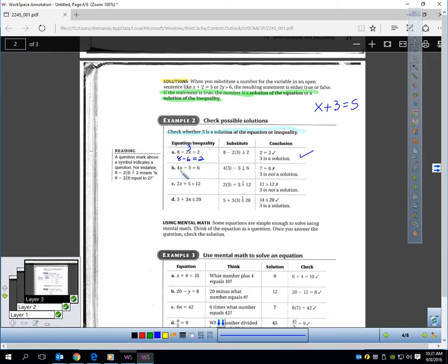Let's check here. If I plug in 3, do I get, can you see here, do I get it equal to 6? Let's try. Let's plug in a 3. 4 times 3 is 12. Is 12 minus 5, 6? No. 12 minus 5 is 7. So 3 would not be a solution here.